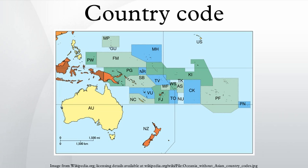Other codings — the following can also represent countries: the initial digits of international standard book numbers, where a group identifies countries, areas, or language regions. The first three digits of GS1 company prefixes, used to identify products such as in barcodes, designate numbering agencies.